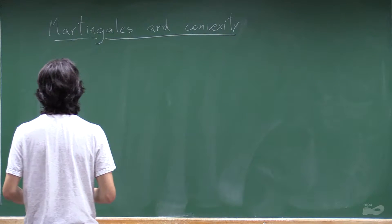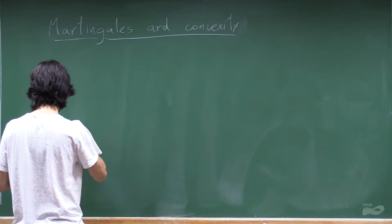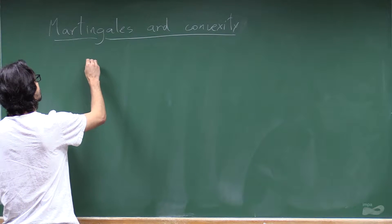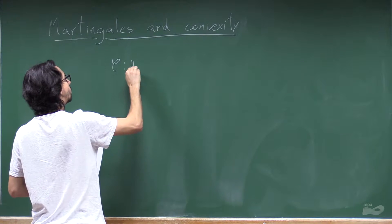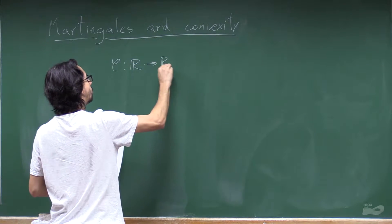So we know Jensen's inequality. That tells that, let's recall, imagine we have phi, a convex function.